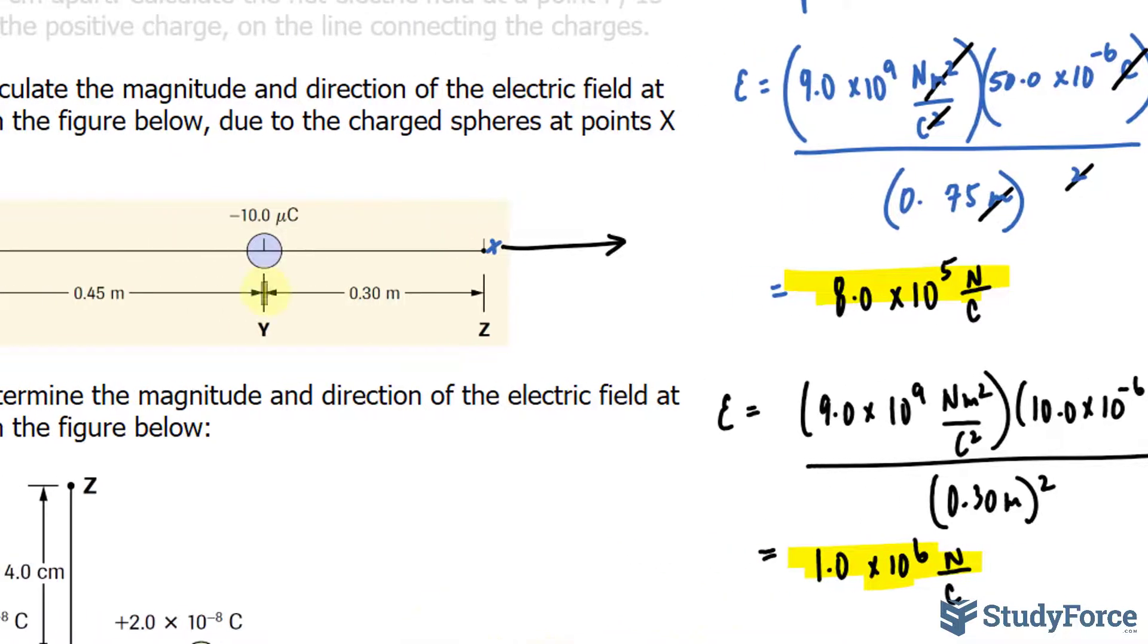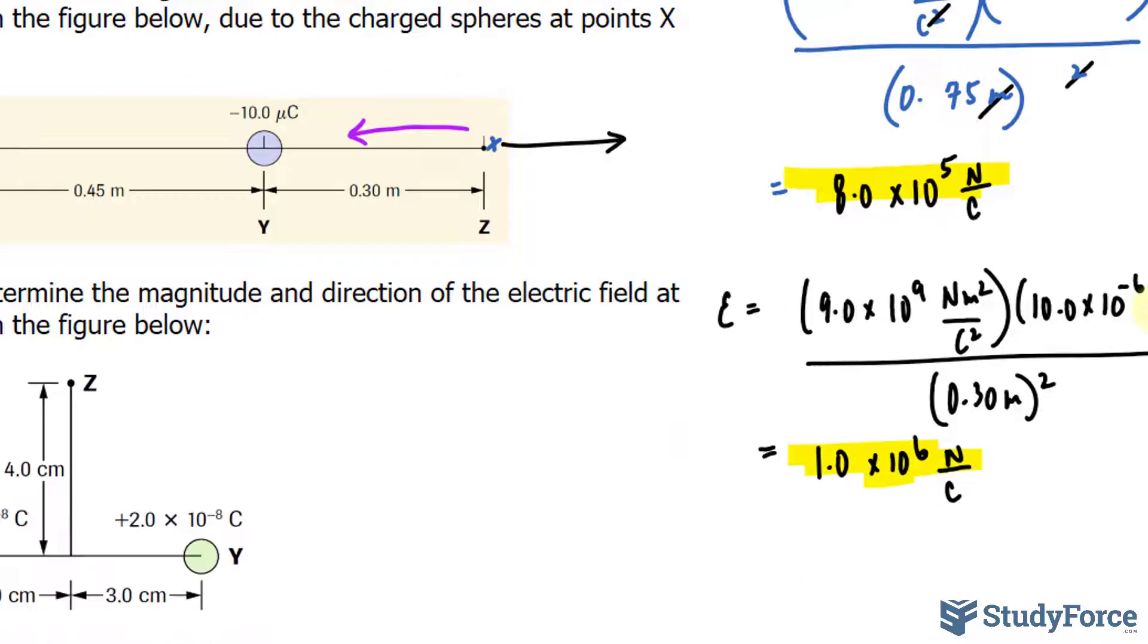And since this is negative, and that's positive, that test charge, expect an attraction. So there's a push and pull situation happening here. This one's going to the right, and this one is going to the left towards the negative charge. Now, because they're on the same plane, and given that we're not considering vector addition or vector subtraction in this particular example, we will in question number 4.